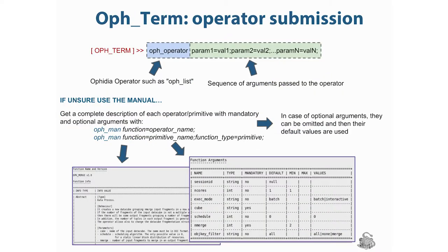If you want to submit an operator to the server, you can use a statement like: OPH_operator, with the operator you want to use, followed by a list of parameters separated by semicolons. For example, OPH_list with a sequence of arguments passed to the operator. If you are unsure, you can use the manual — that is, another operator called OPH_man. You can use OPH_man with function equal to a particular operator name you want to understand. Or, if you want to show information about a primitive, you can use the primitive name with function type set to primitive.